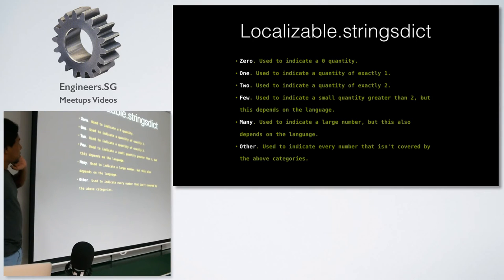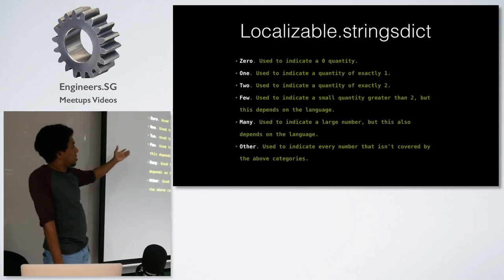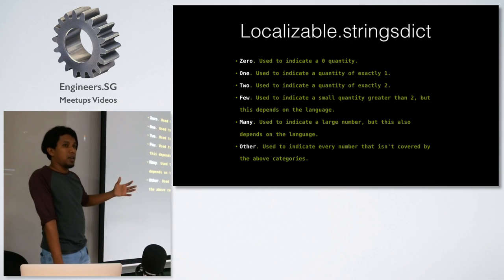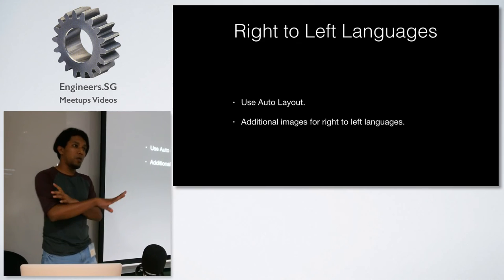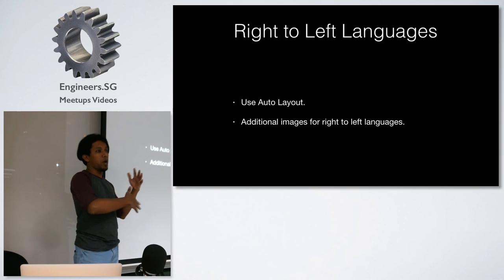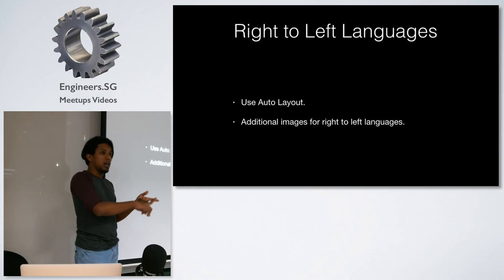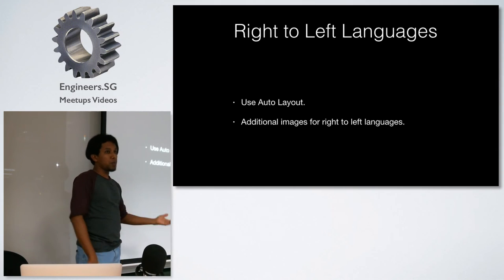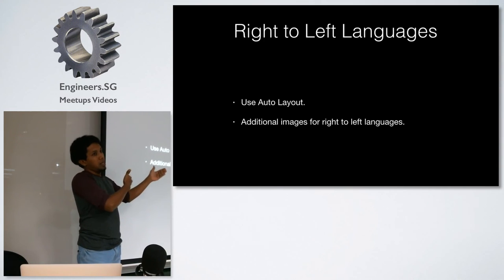It's important to use this stringsdict file because some languages handle plural cases differently — for example, some languages have special forms for zero, or a 'few' case that differs from 'many.' You can use all these keys to assign values that are automatically fetched based on the number. Also, when localizing for right-to-left languages, it's important to use Auto Layout — otherwise you'd have to manually recalculate your layout and check if the language is Hebrew or Arabic, but with Auto Layout the UI automatically mirrors for right-to-left languages.